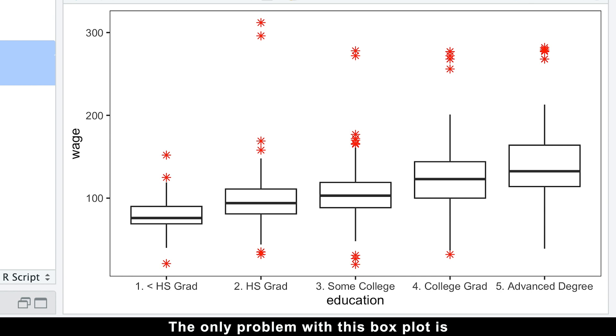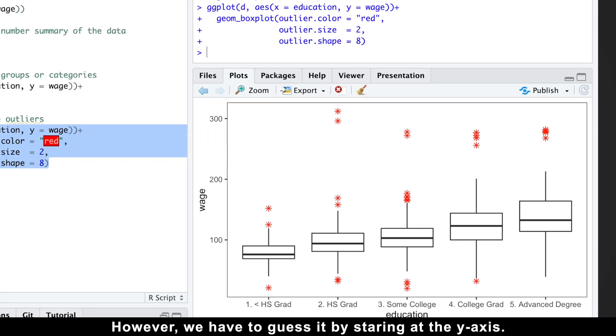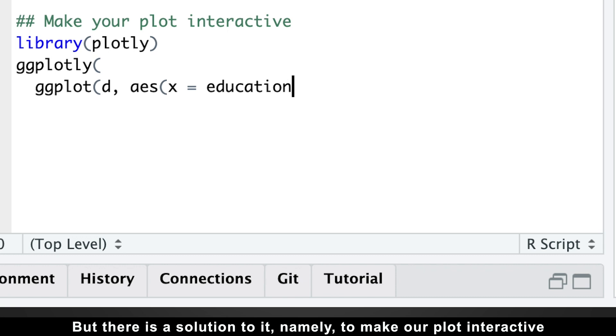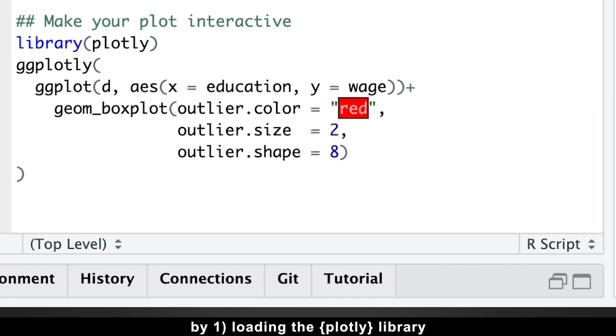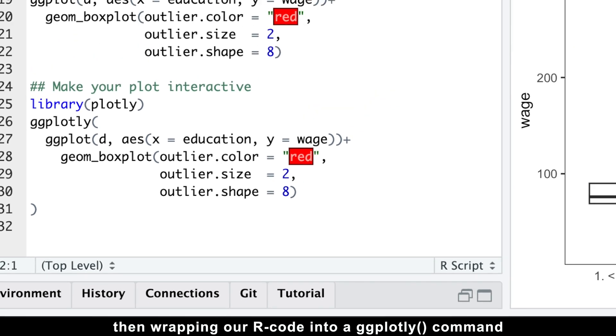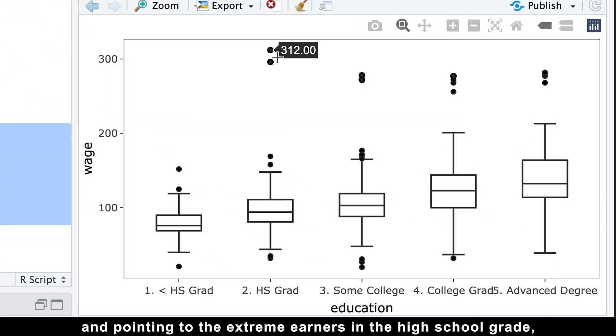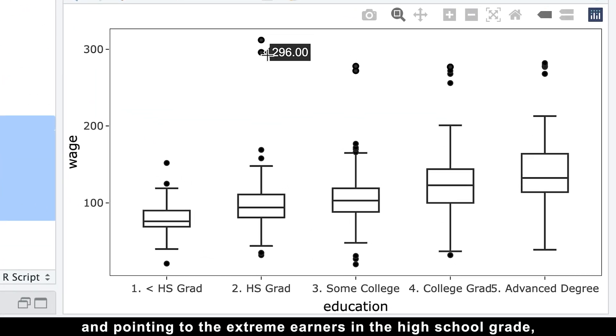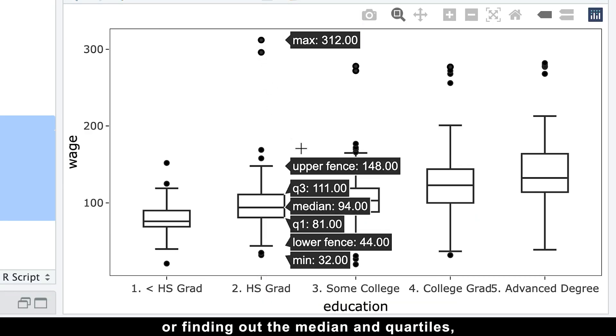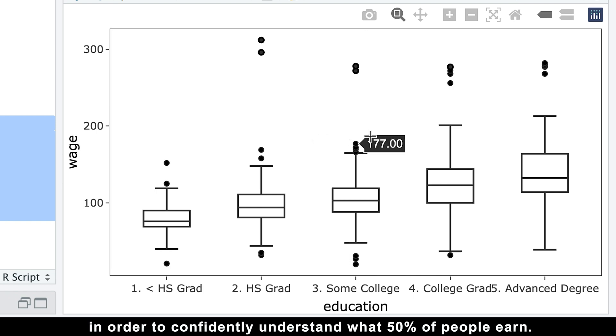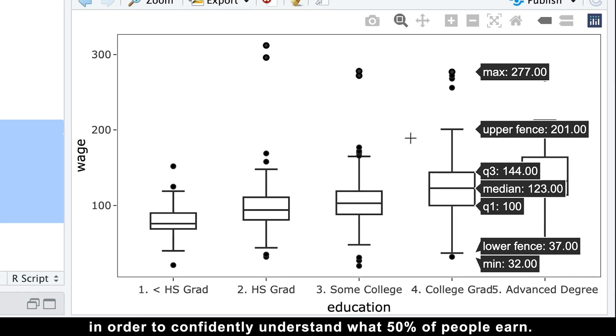The only problem with this boxplot is that sometimes we want to know the exact values of outliers or the five-point summary. However, we have to guess it by staring at the y-axis. But there is a solution to it. Namely, to make our plot interactive. By first loading the plotly library, then wrapping our R code into ggplotly command, and pointing to the extreme earners in the high school grade, the Steve Jobses or Mark Zuckerbergs of the world, or finding out the median and quartiles, in order to confidently understand what 50% of people earn.